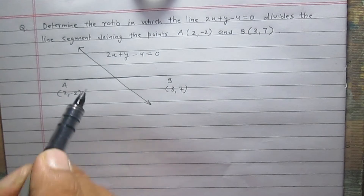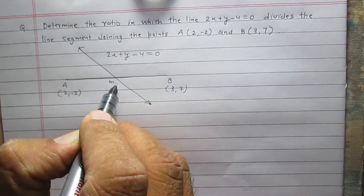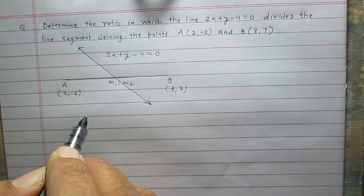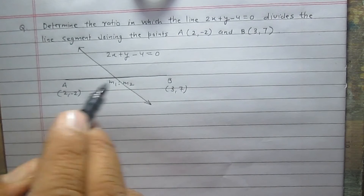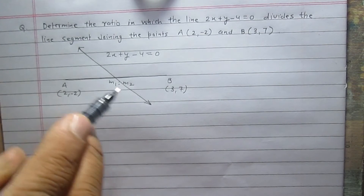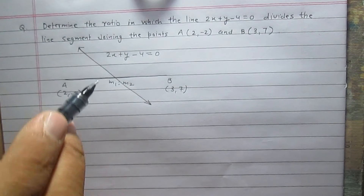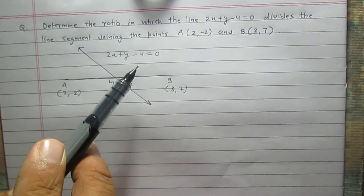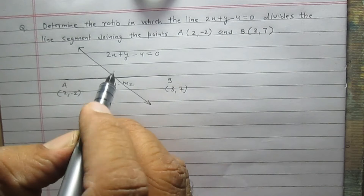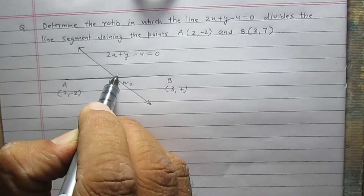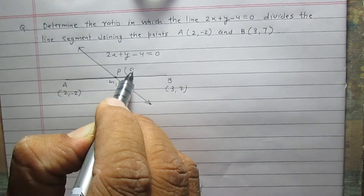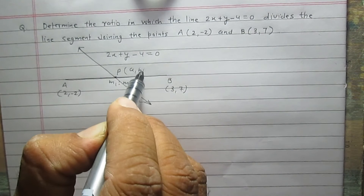Let us consider the ratio is M1 to M2, or M1 upon M2, in which this line segment is divided by the straight line whose equation is 2x plus y minus 4 equals 0. Let us consider the point of intersection is P, with coordinates (A, B).